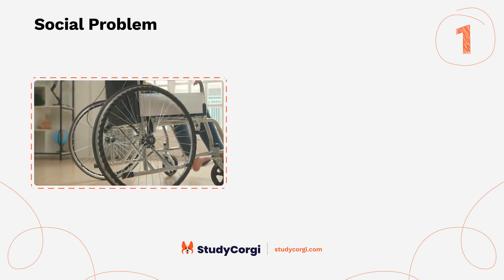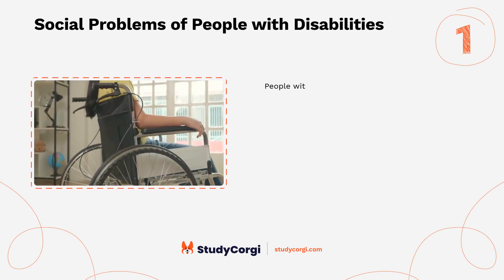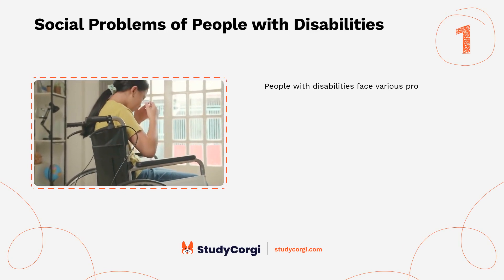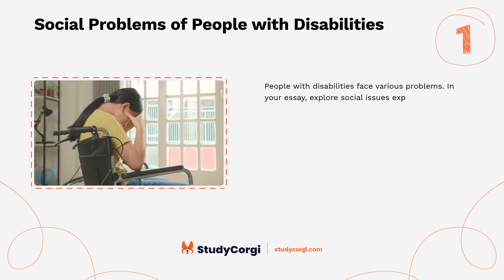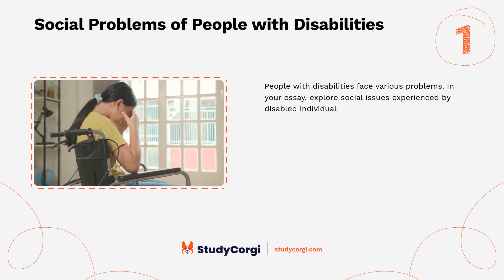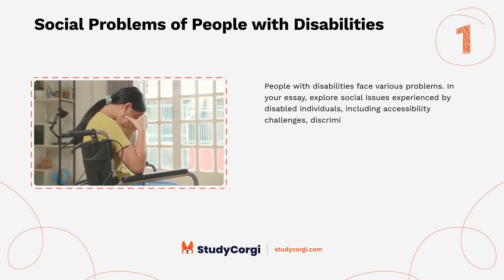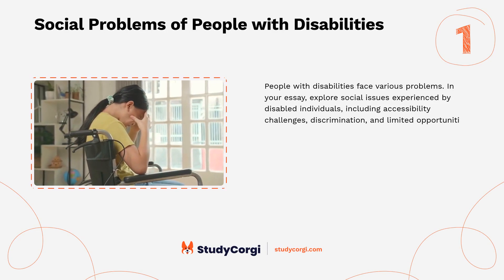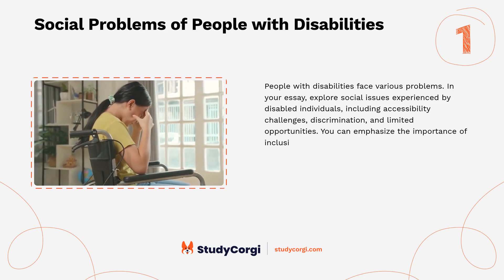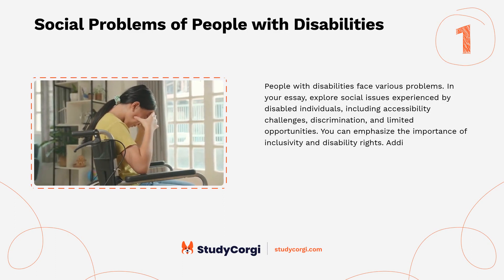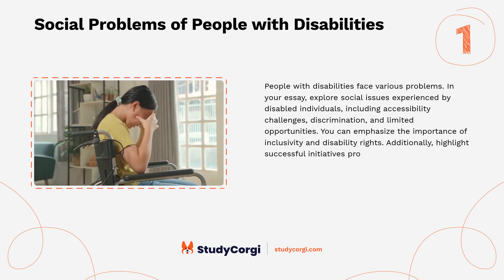Social problems of people with disabilities. People with disabilities face various problems. In your essay, explore social issues experienced by disabled individuals, including accessibility challenges, discrimination, and limited opportunities. You can emphasize the importance of inclusivity and disability rights. Additionally, highlight successful initiatives promoting social inclusion.